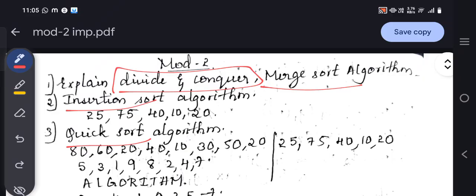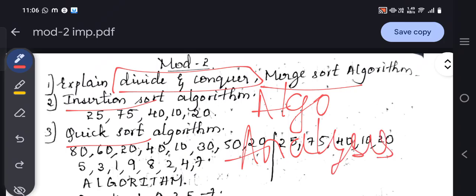When they ask you to explain, you have to write the algorithm first. After the algorithm, you have to do analysis. Now what is analysis? You have to check whether it comes in recursive or non-recursive. In the first module, whatever we studied, same way in the second module you have to identify whether it is recursive or non-recursive and analyze the algorithm.